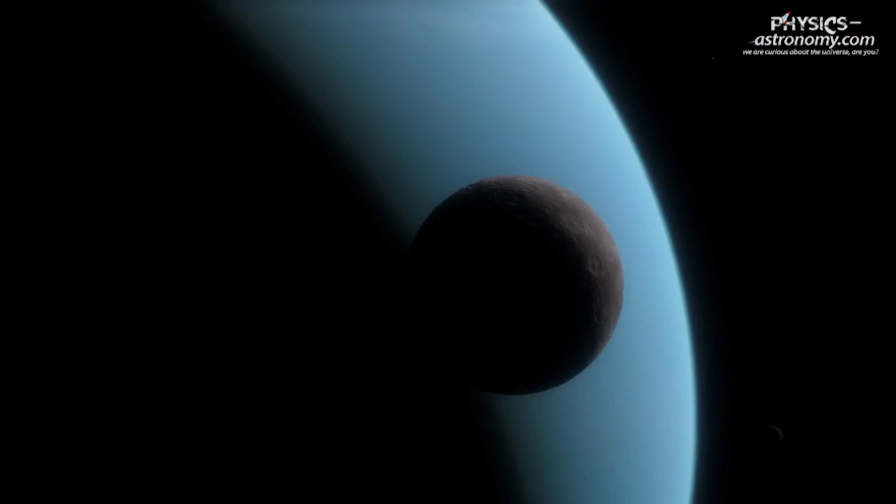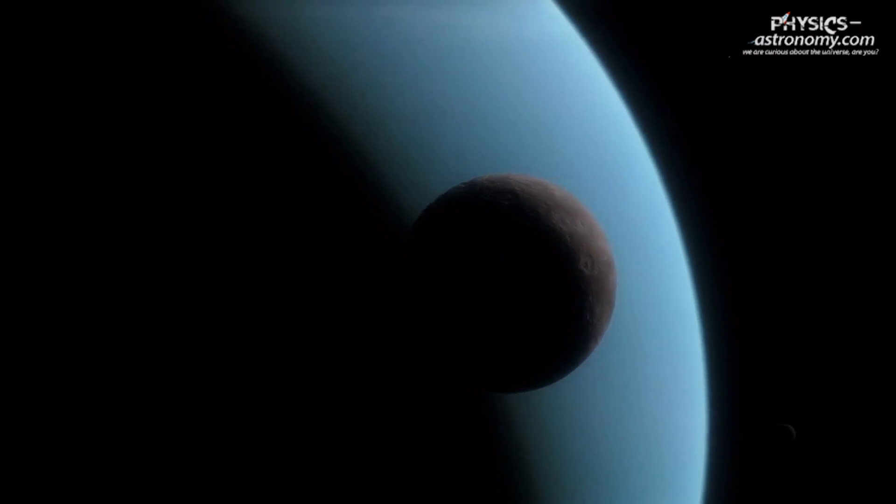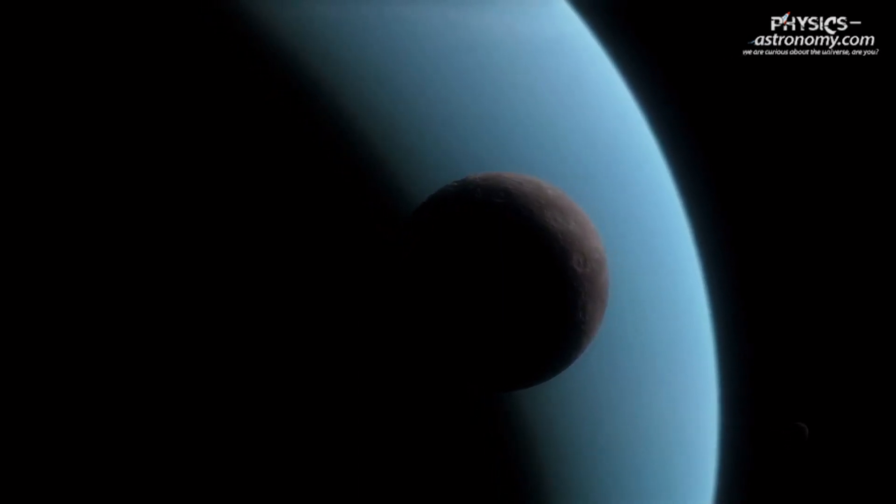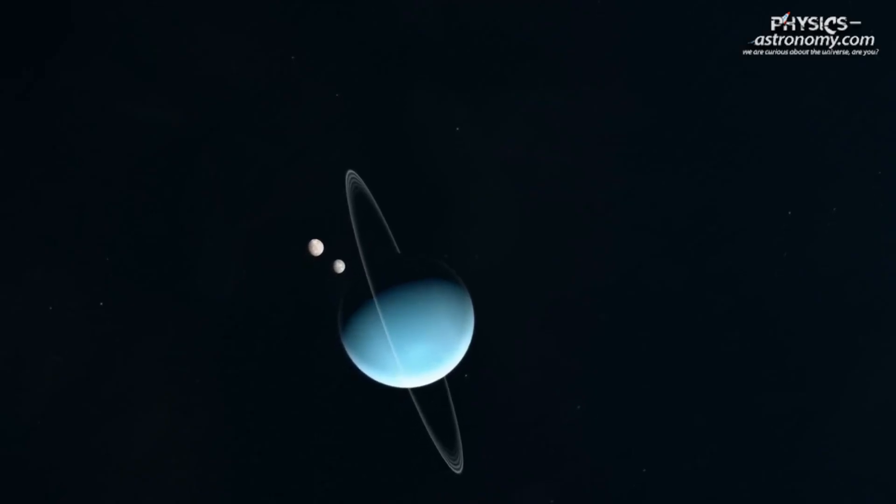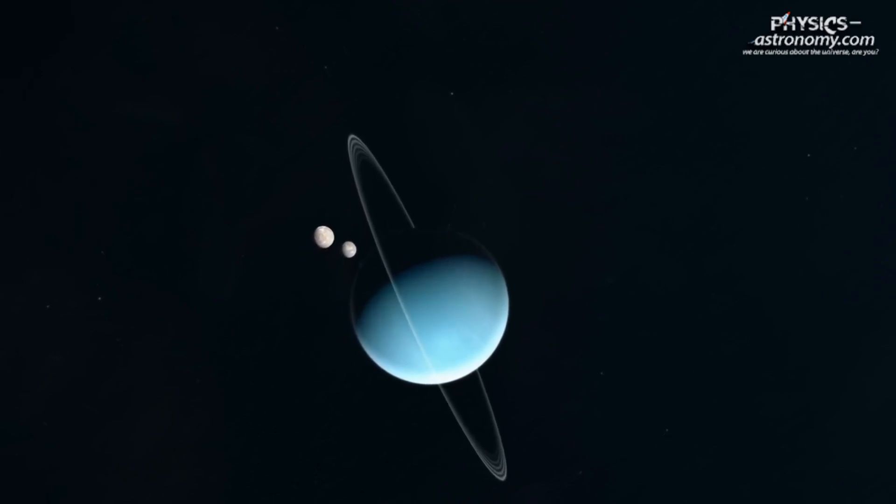This groundbreaking discovery sheds light on the turbulent past of Uranus and deepens our understanding of planetary evolution. According to the study, Uranus experienced not one, but two massive collisions during its formative years.